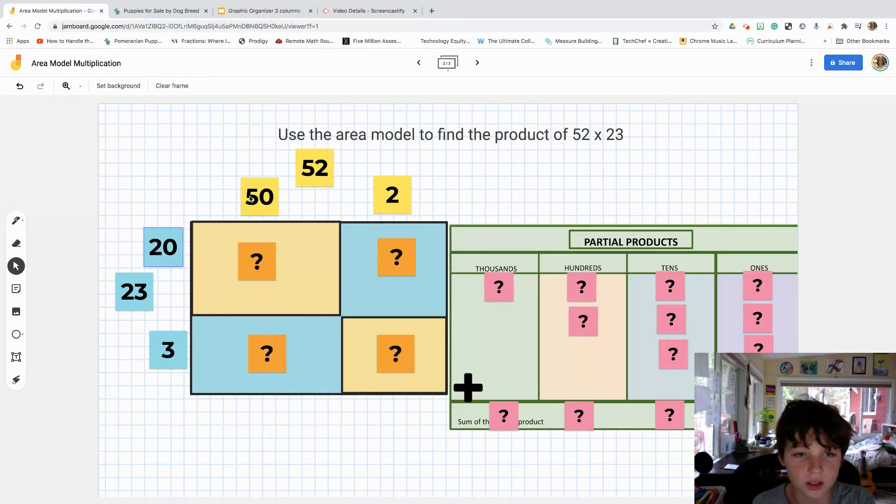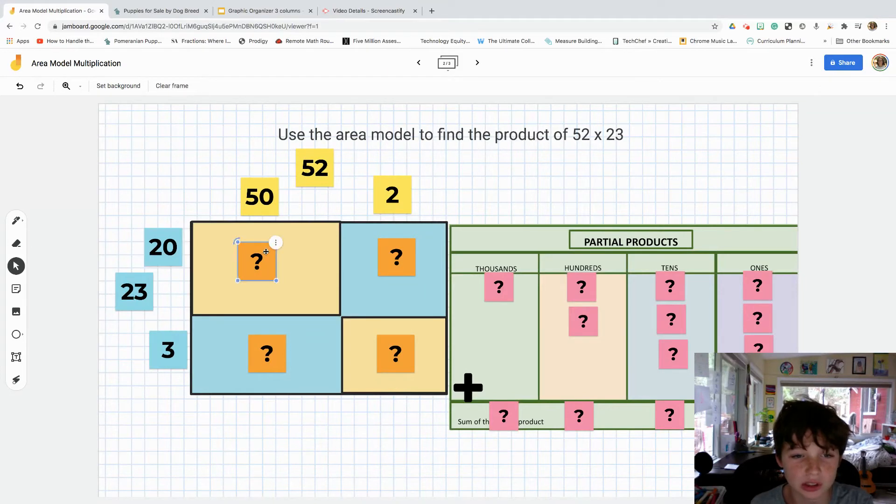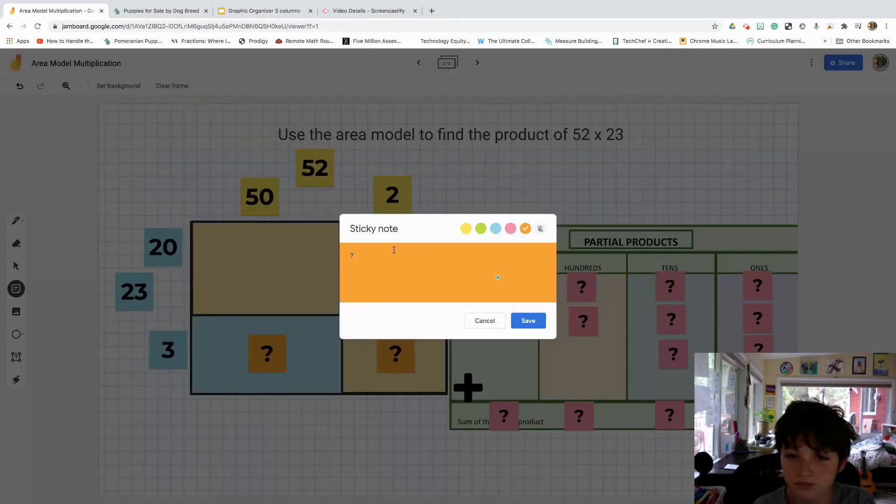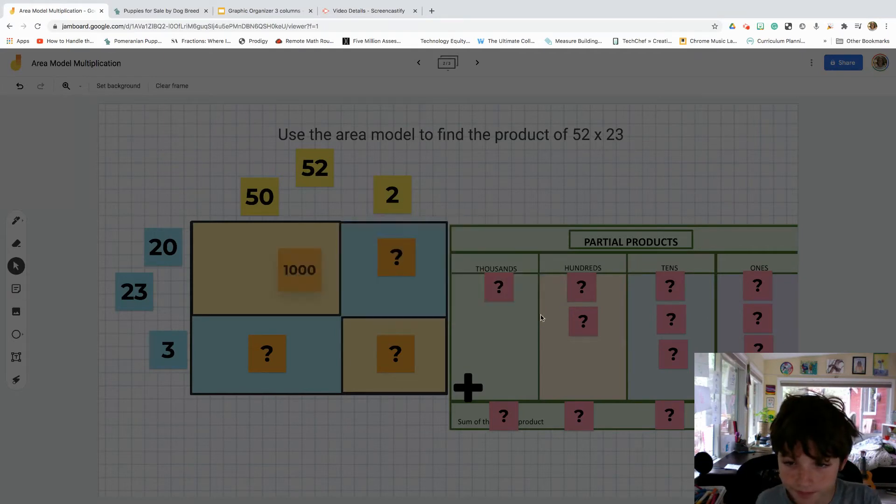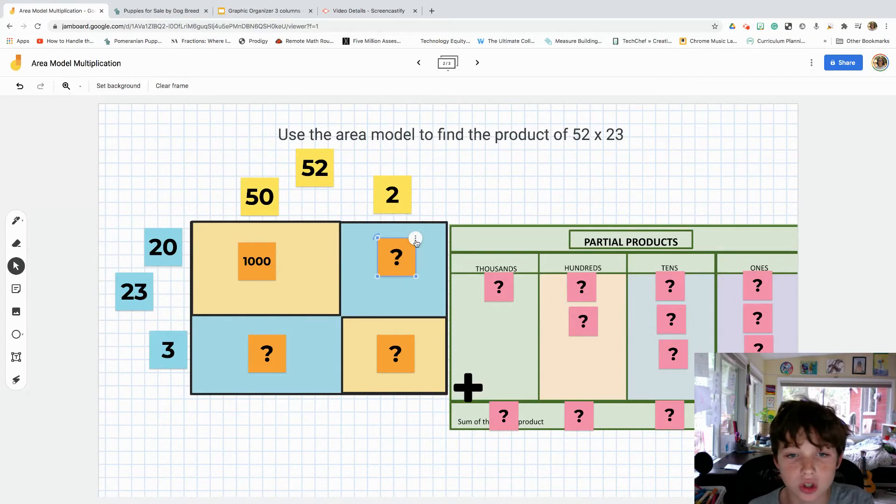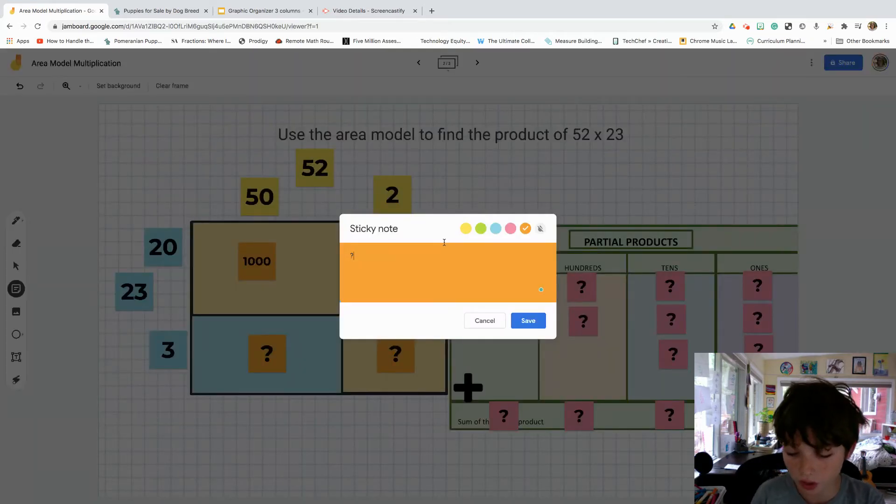So 20 times 50, well, I know 2 times 5 equals 10. Add the two zeros, 1,000. And then let's do 20 times 2. 2 times 2 equals 4. So add the zero in 40.